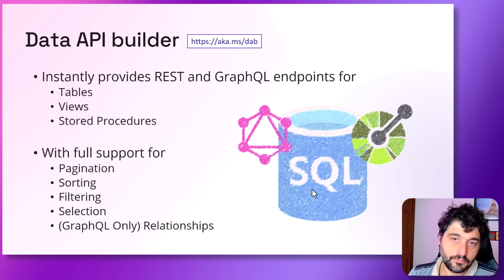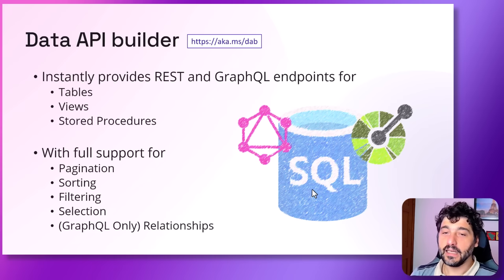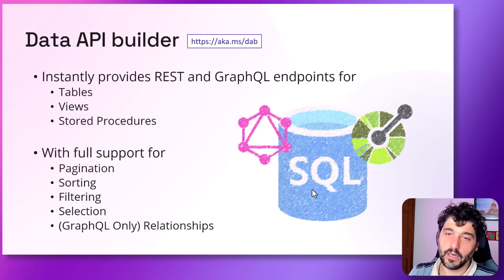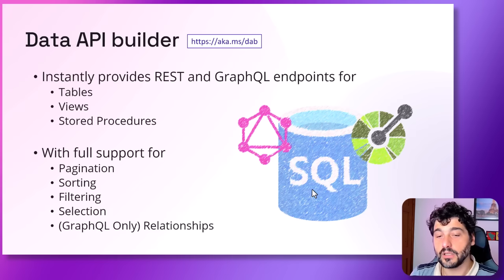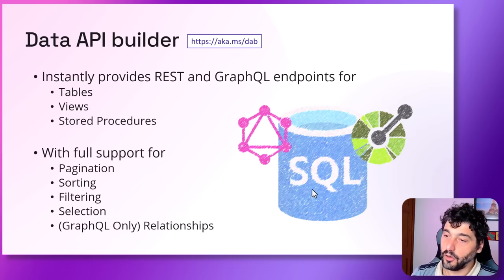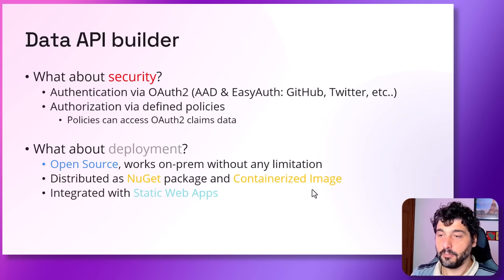Data API Builder is a tool built in .NET 6 — soon to be moved to .NET 8 — that instantly provides REST and GraphQL endpoints for tables, views, stored procedures on Azure SQL or SQL Server, and collections for non-relational databases. For every object exposed, it supports pagination, sorting, filtering, selection, and if you are using GraphQL, even navigation between relationships. It gives you full access to the power of your database using modern endpoints and protocols.